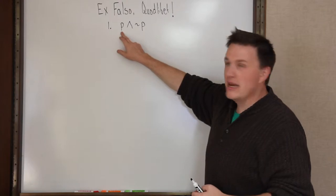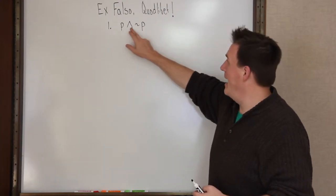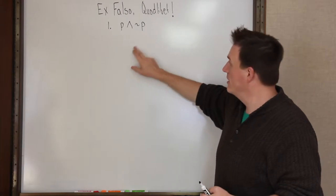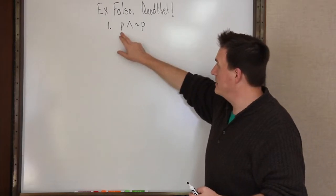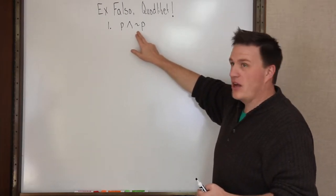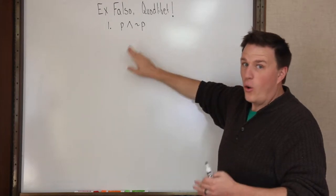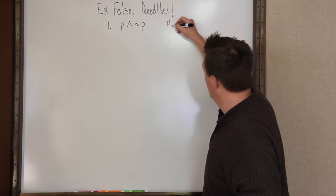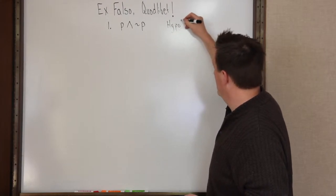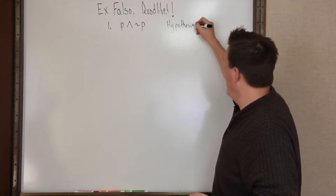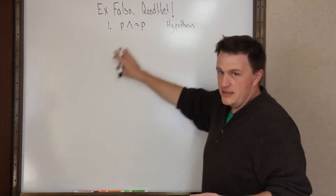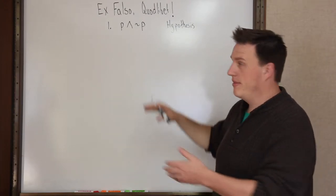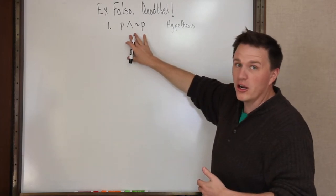So your assertion could be it is raining and it is not the case that it is raining, or Kyle is the best and it is not the case that Kyle is the best, or any assertion at all. And we call this the hypothesis. We can state this as a hypothesis, but if there were a true contradiction, then that would be the fact that we would start our argument from.